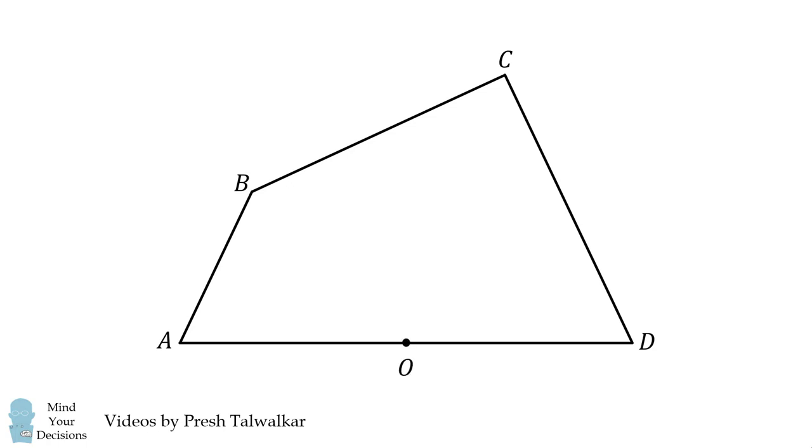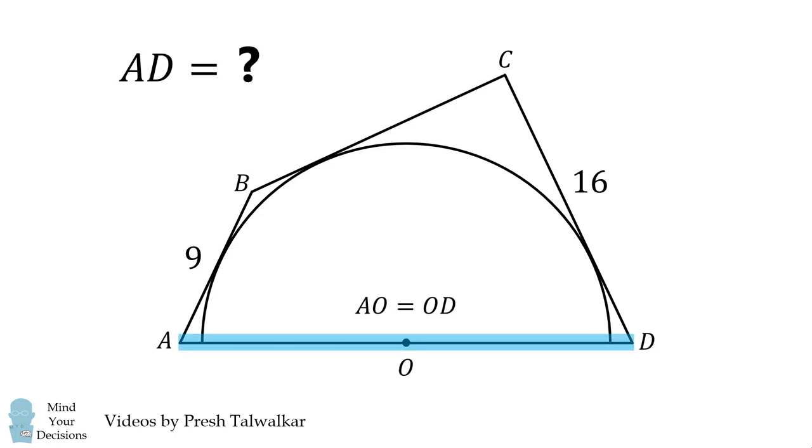ABCD is a quadrilateral. Point O is alongside AD and is the center of a semicircle that is tangent to sides AB, BC, and CD. If AB is equal to 9, CD is equal to 16, and AO is equal to OD, what is the length of AD?